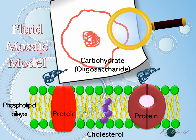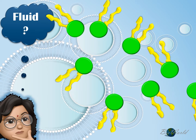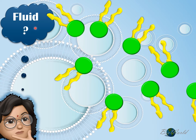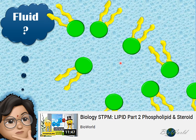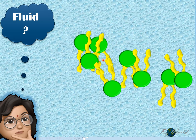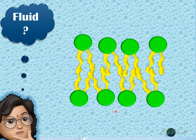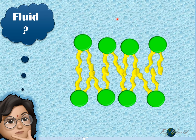So this is the structure of the fluid mosaic model. Let's explore why Singer and Nicholson chose the name fluid as well as the name mosaic. The plasma membrane is fluid, meaning that it is not a static surface — it is a surface that is in constant movement. This is best described by observing the behavior of the phospholipid molecules. In an aqueous solution, the phospholipid molecules tend to form a bilayer. When the phospholipids rearrange to form a phospholipid bilayer, the hydrophilic heads are in contact with the aqueous solution while the hydrophobic tails will be hidden in between to be away from the aqueous solution.